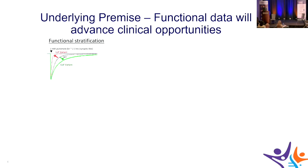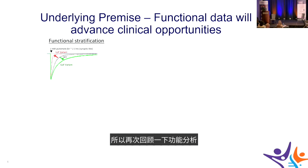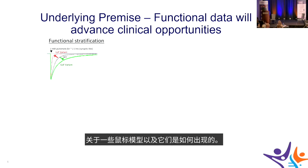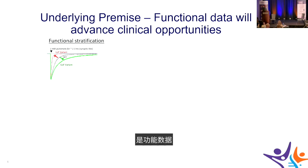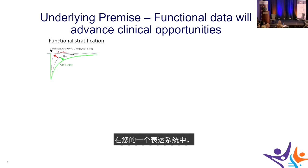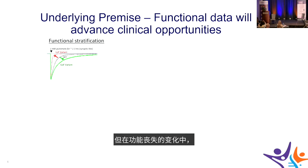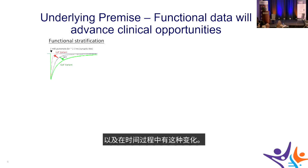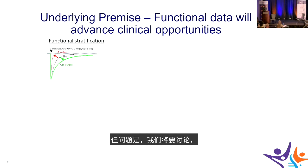Functional analysis underpins clinical opportunities. The premise is that functional data will advance clinical opportunities by stratifying patients. In expression systems, simulating synaptic current shows what wild-type current looks like compared to loss-of-function variants — which may appear smaller with altered time course — or gain-of-function variants, which may appear larger with a different time course. The question is: where is the edge between gain and loss of function?